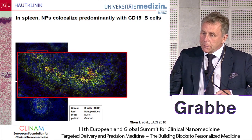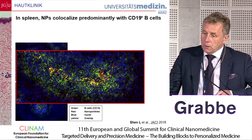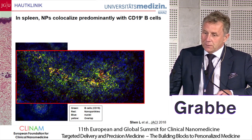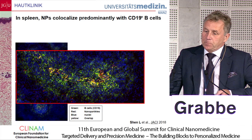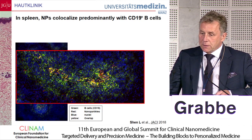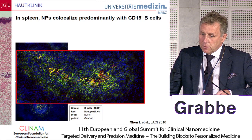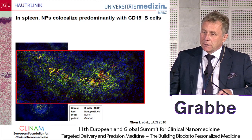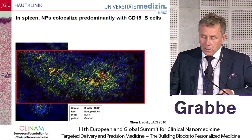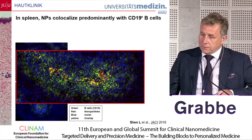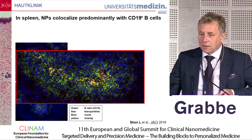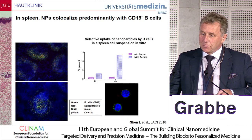In an enlarged picture, when we counterstained with a B-cell antigen marker, it became clear that many of the nanoparticles actually co-localized predominantly in the B-cell areas of the lymphatics. Given the fact that we had a dendritic cell targeting antibody, we were quite surprised by this result.